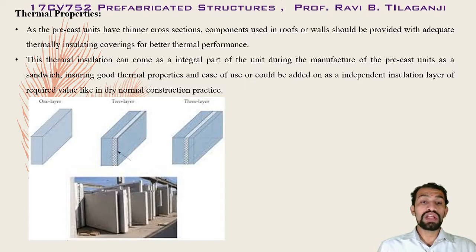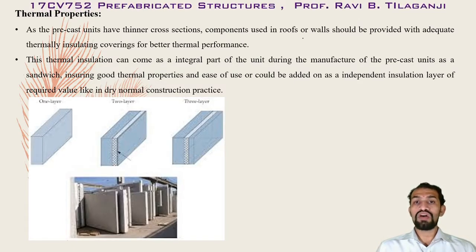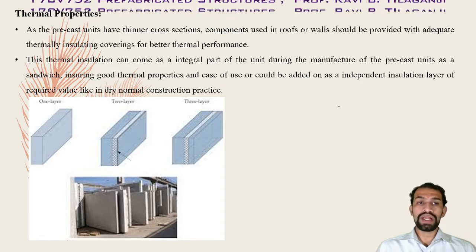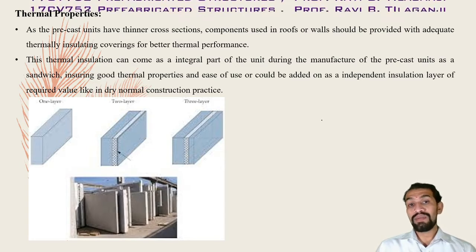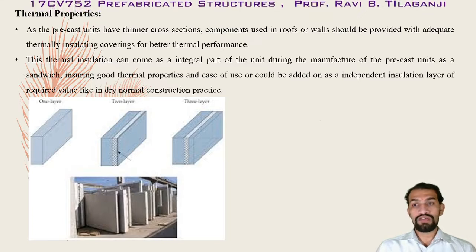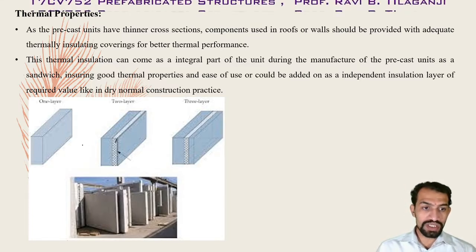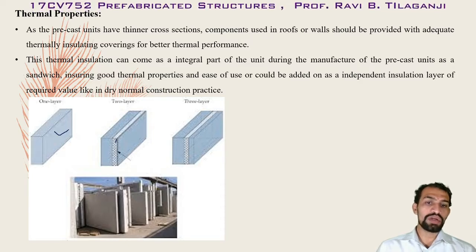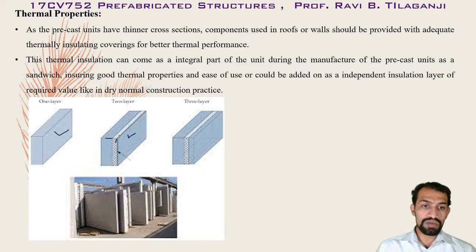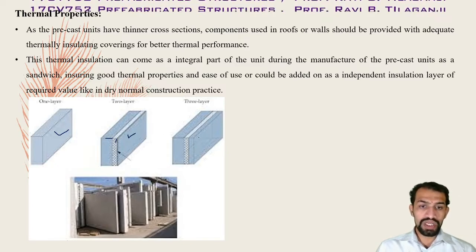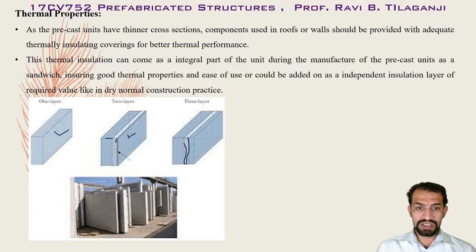Regarding thermal properties, precast units having thin cross-sections used in roofs and walls should be provided with adequate thermal insulation for better thermal performance. Thermal insulation can come as an integral part of the unit during manufacture - as a sandwich panel. This can be a single layer without thermal insulation, a two-layer with insulation on one side, or a three-layer sandwich panel.